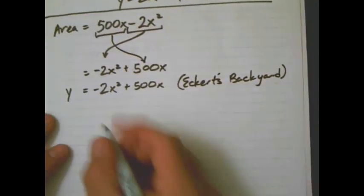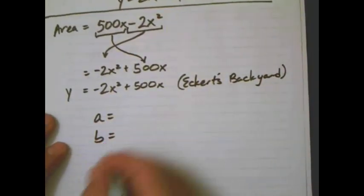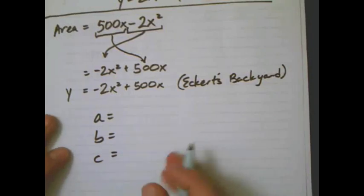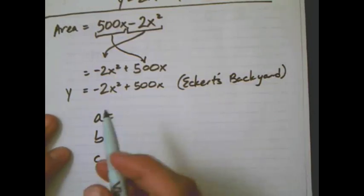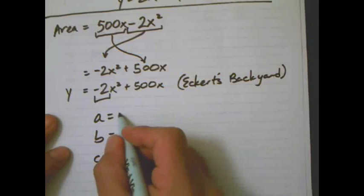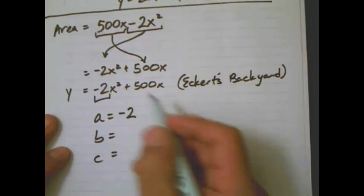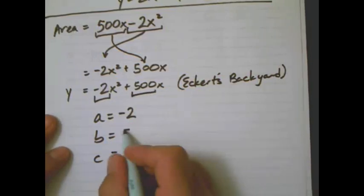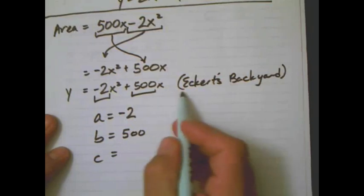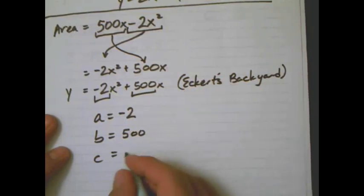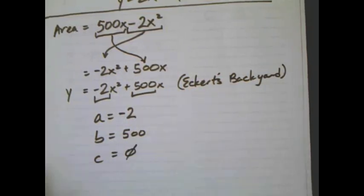Last one. My backyard. What is a? I think I heard somebody say it. Negative 2. b? 500. Is there any c? No, there is not. So, do your practice problems. Give me a call if you have any questions.